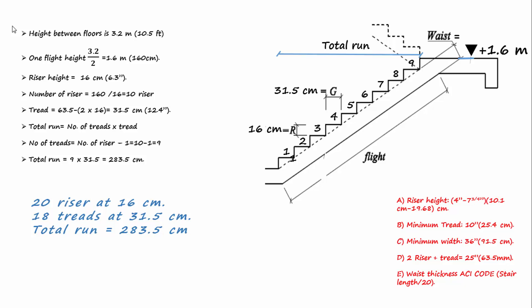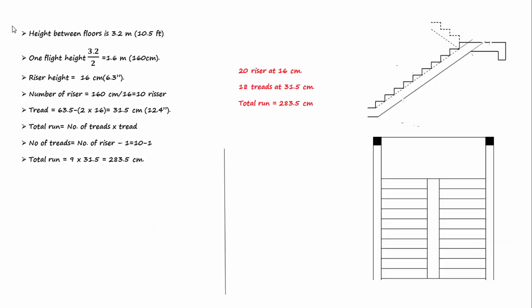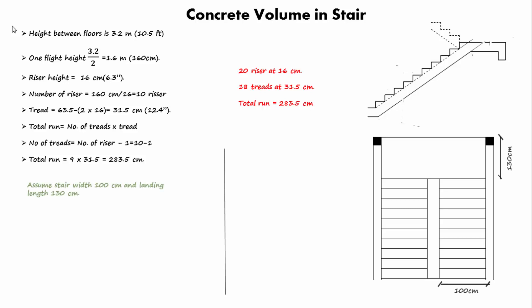Now let's calculate the concrete volume in our stair. We will assume the width of the stair is 100 cm and the landing depth is 130 cm. We will divide the stair into three parts: two flights and one landing.